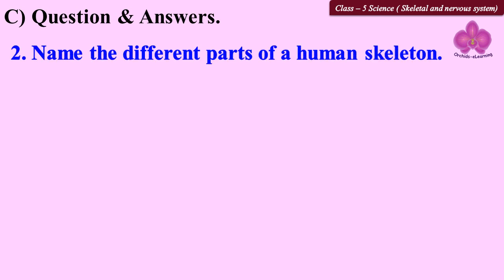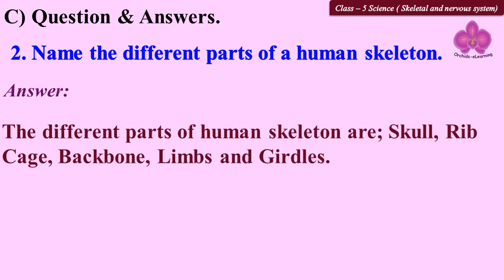Question 2: Name the different parts of a human skeleton. The different parts of the human skeleton are skull, ribcage, backbone, limbs, and girdles.